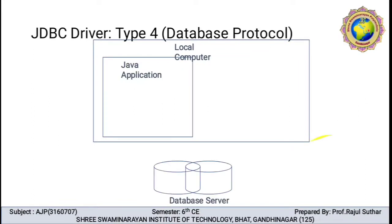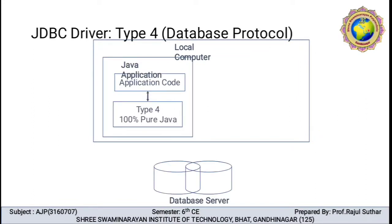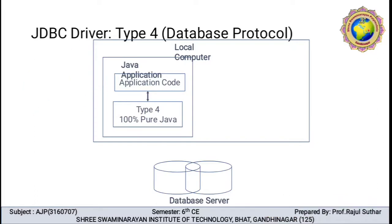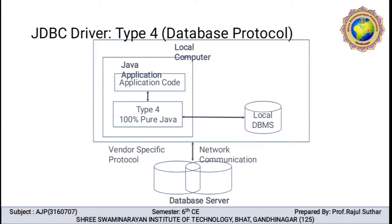In the figure of type 4 driver, the local computer is where your program is stored, with a GUI client interface. A Java application code is written there — for example, a Hello program or any program written in .java. Type 4 driver is native protocol, or 100% pure Java. It uses a vendor-specific protocol and network communication. There is no intermediate — it directly communicates with the database server.